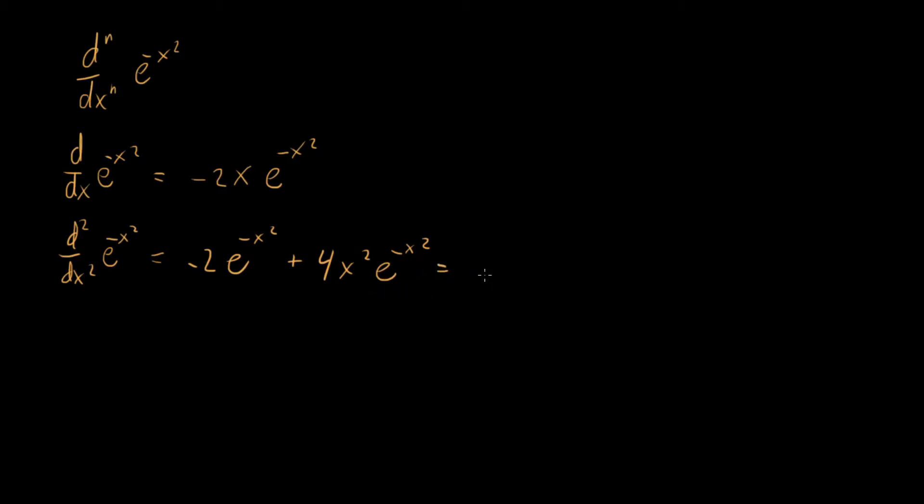And this whole thing right here can be written as one big polynomial, 4x squared minus 2 times e to the minus x squared. So we've got a polynomial times our exponential function, times our Gaussian.